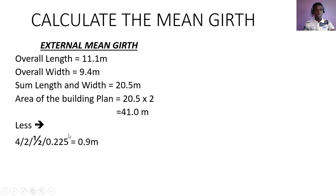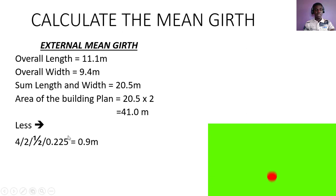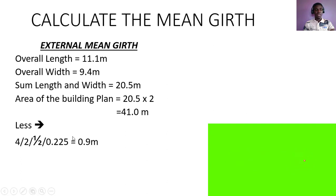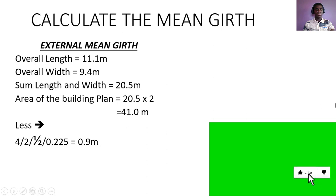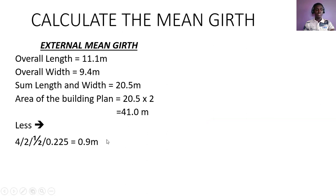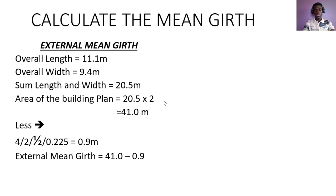For this video we're going to use the building plan I just showed you. Bear this formula in mind and identify the block thickness from your building plan. From my building plan the block thickness is 0.225 meters, so applying the formula: 4 × 2 × 0.5 × 0.225 = 0.9 meters. We subtract 0.9 meters from 41.0 meters, giving us a standard external main guard of 40.1 meters.